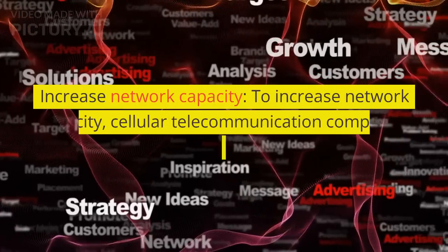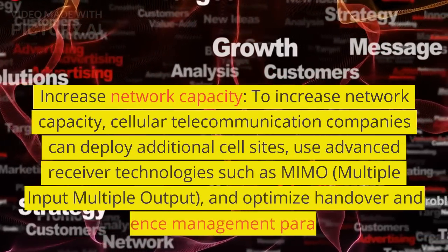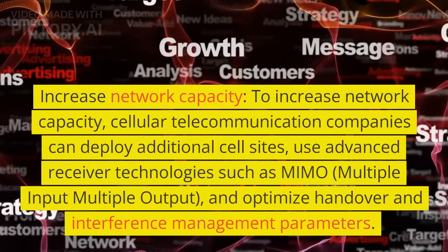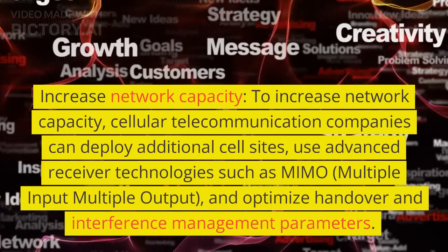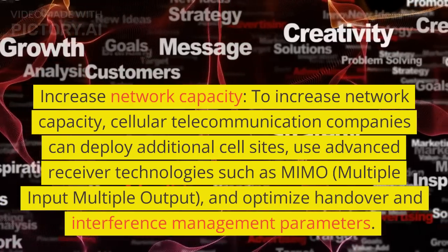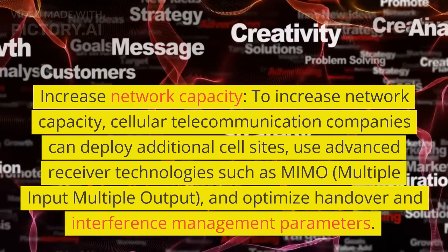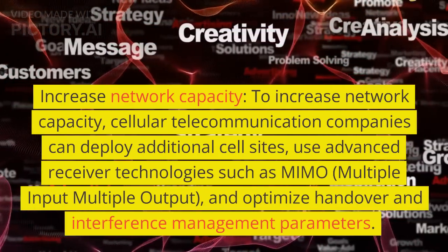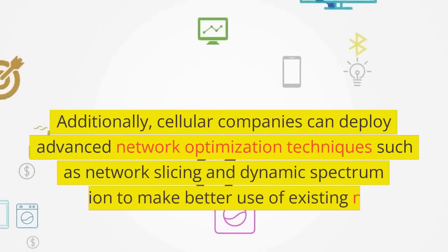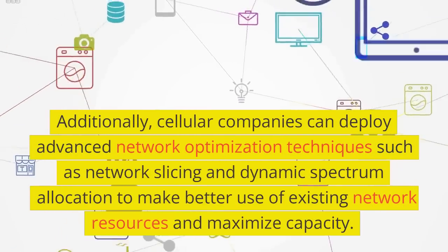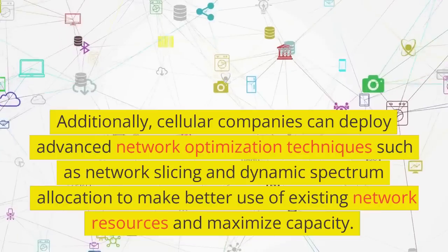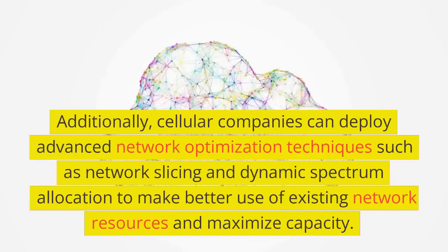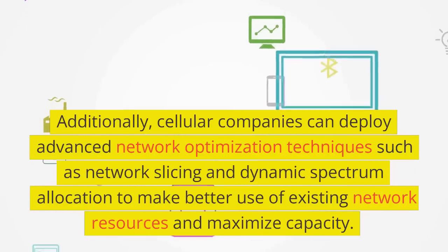Increase Network Capacity: To increase network capacity, cellular telecommunication companies can deploy additional cell sites, use advanced receiver technologies such as MIMO (multiple input-multiple output), and optimize handover and interference management parameters. Additionally, cellular companies can deploy advanced network optimization techniques such as network slicing and dynamic spectrum allocation to make better use of existing network resources and maximize capacity.